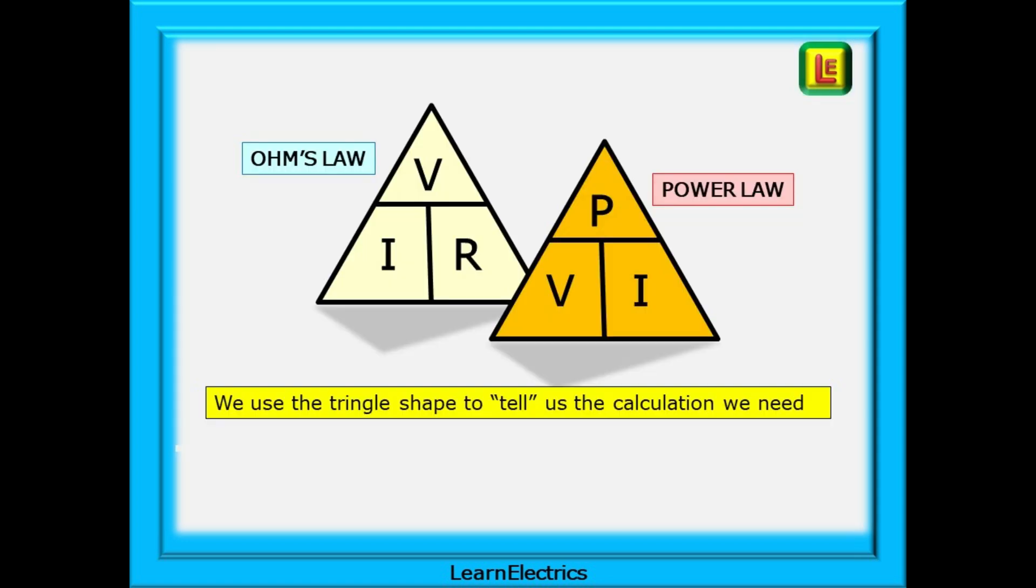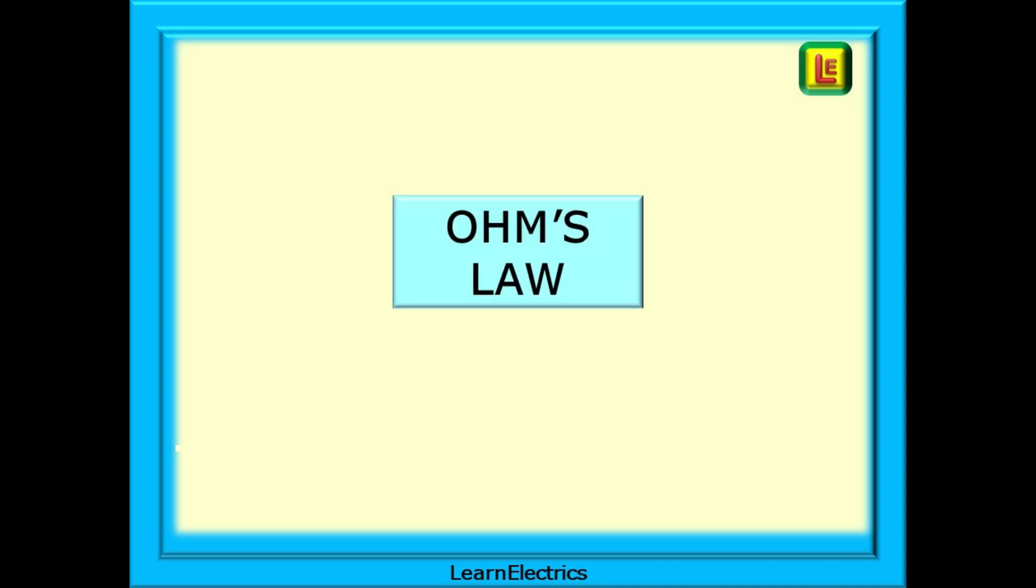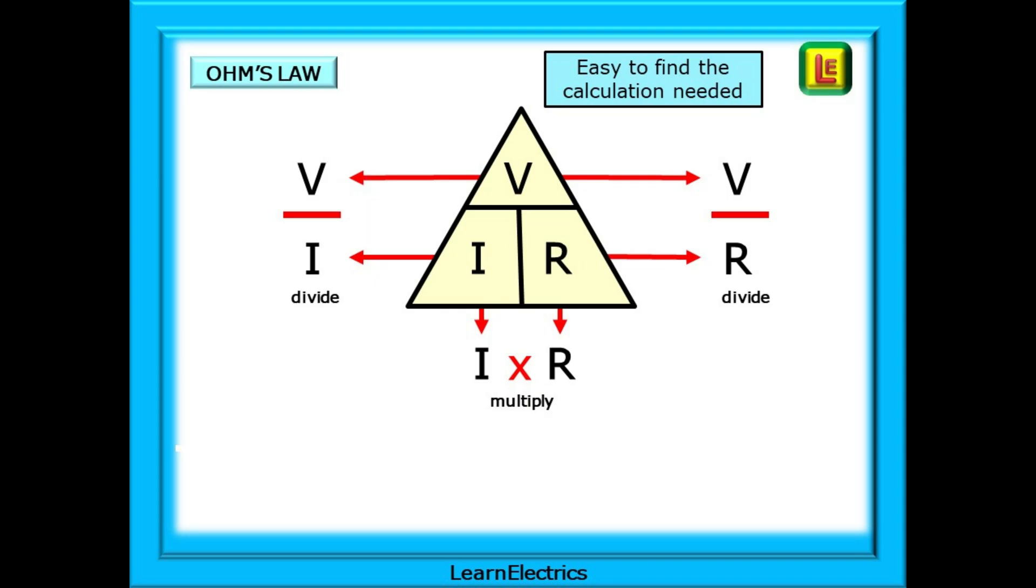You are probably familiar with the triangle shape that shows either Ohm's law or power law, and we use the triangle shape to tell us the type of calculation that we need to do. Let's look at this beginning with Ohm's law. Any two known values will give us the third unknown number. Just move the known values out of the triangle and the position that they are in will tell you the calculation.